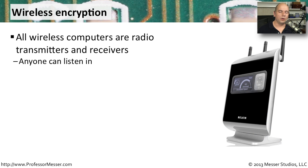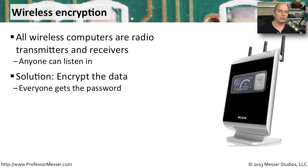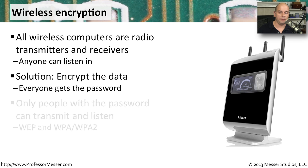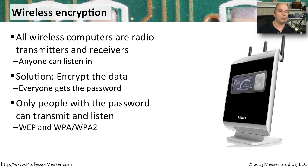On your wired network, you have a built-in level of security because you have to be physically connected to the wire. But on a wireless network, everybody can hear everything sent across the network — anyone can listen in, gather packets, and see what's going back and forth. The solution is to encrypt all of the information going over that wireless network and make sure that everybody is using credentials or a shared password to log in. Only people with that password or proper credentials can see what's going on over that link.